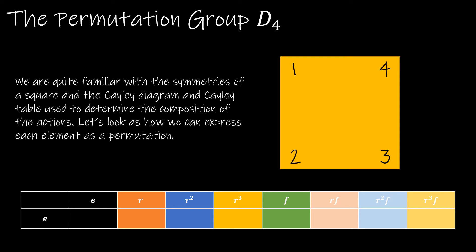Let's take a look at the permutation group D4. You might be saying, hold up — I thought that was the dihedral group D4. And yes, you're right. What we're going to do is look at the motions of the symmetries of a square written instead as permutations. We're already very familiar with this group, which is why I wanted to start our examples here. We've made the Cayley table, and we know it's a group.